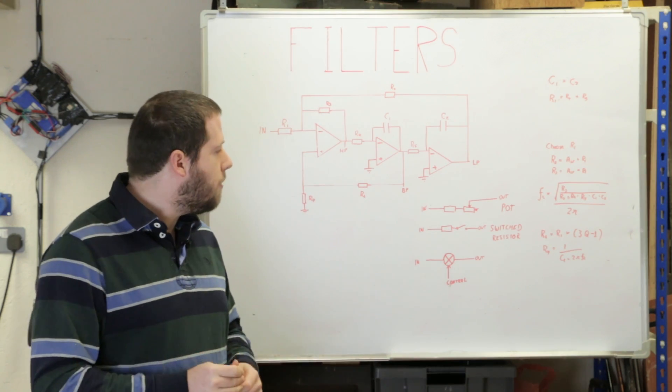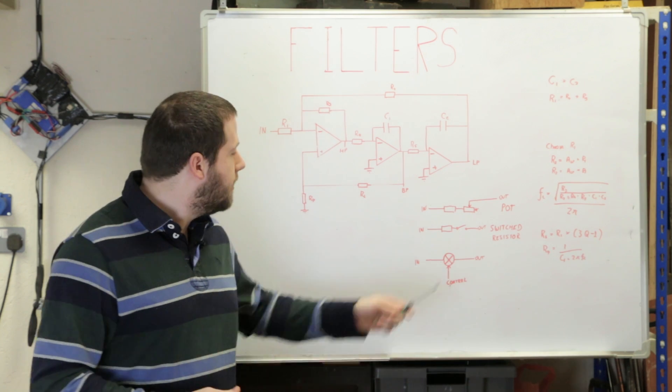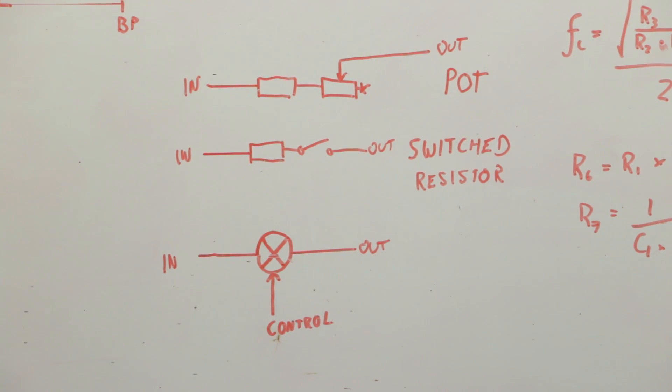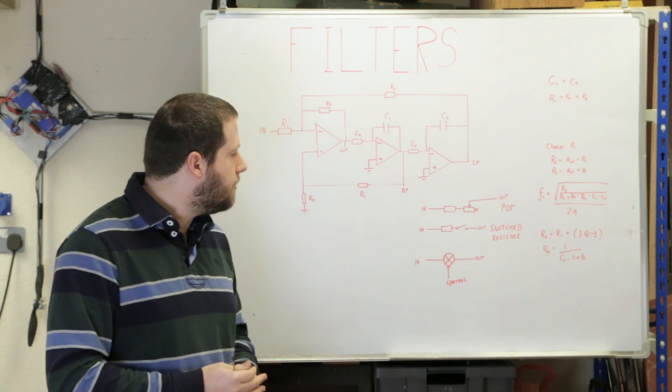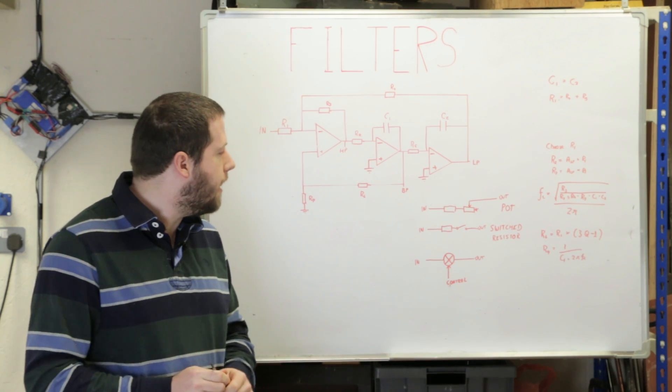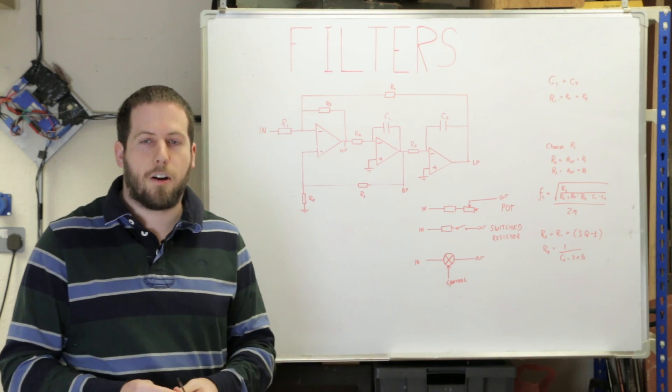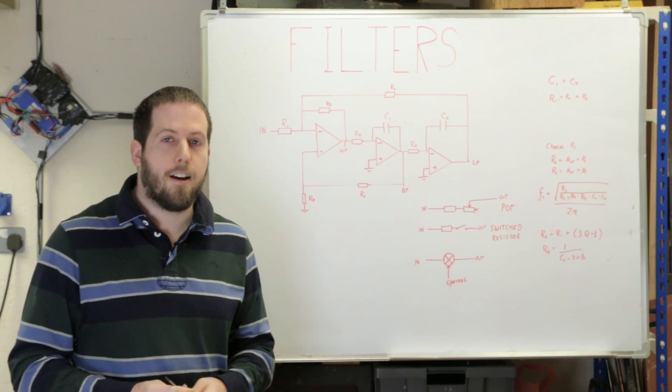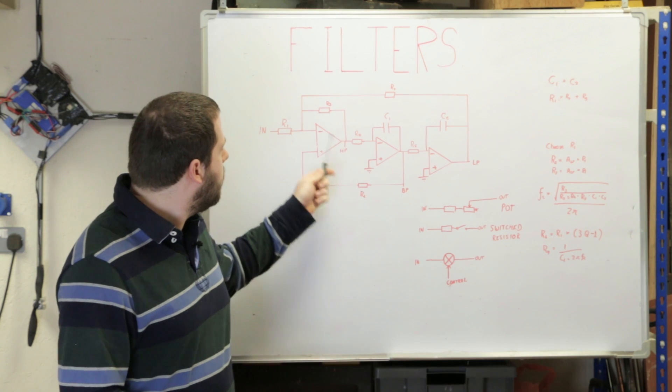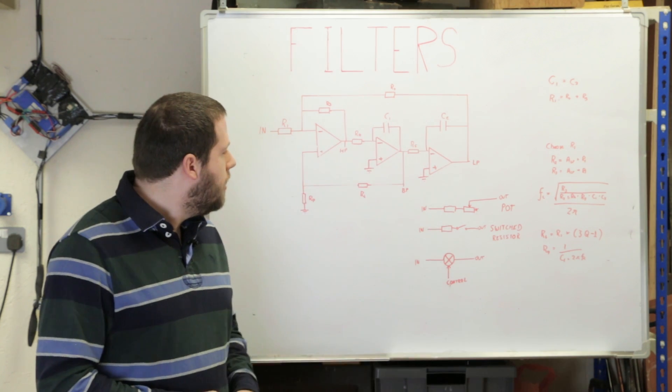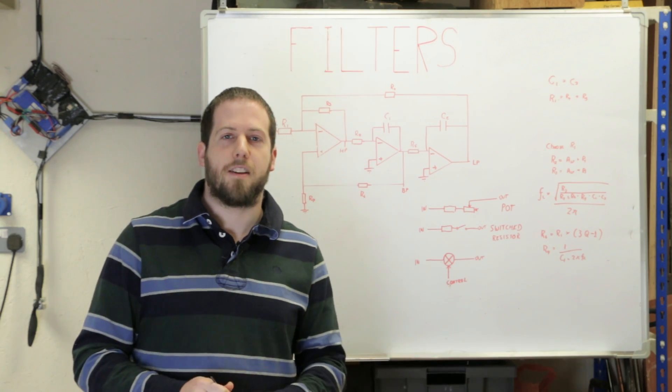Assume you don't want to go for a potentiometer, what other options are there? One which I really like is what's called a switched resistor. If we put a fixed resistor in here for a variable filter from 1 kHz to 10 kHz, 10 kHz is our highest frequency, so this resistor is going to set our highest frequency. That's a 1600 ohm resistor we put in there.